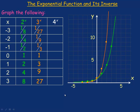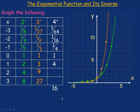For y equals 4 to the x, 4 to the power of negative 3 would be 1 over 4 cubed. Since 4 cubed is 64, that's 1 over 64. Then we would have 1 over 16, and 4 to the negative 1 is 1/4. 4 to the power of 0 is 1, 4 to the power of 1 is 4, 4 squared is 16, and 4 cubed would be 64.